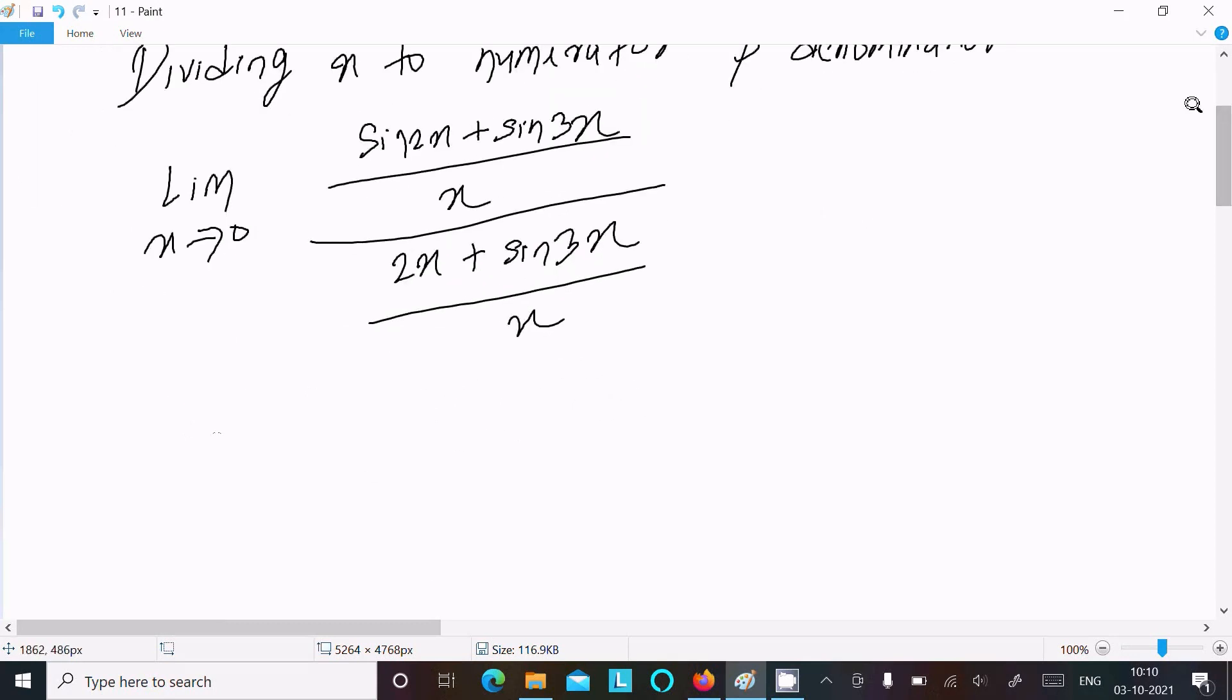Now the next is here, writing limit x tends to 0. This here, sin 2x over x we can write, and this here sin 3x over x we can write. This here 2x by x we can write, here sin 3x by x we can write. So this x, this x, this cancels. There is no effect.